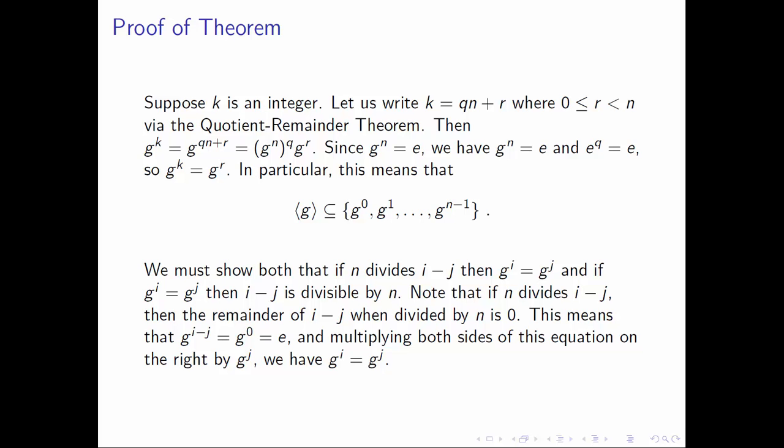The first direction is easy. Assume n divides i − j. This means when we write i − j using the quotient remainder theorem, the remainder is zero. Applying our earlier observation that g^k = g^r with k = i − j and r = 0, we find that g^(i−j) equals g⁰, which is the identity. Multiplying both sides on the right by gʲ, the left side becomes gⁱ and the right side becomes gʲ, so we conclude gⁱ = gʲ.